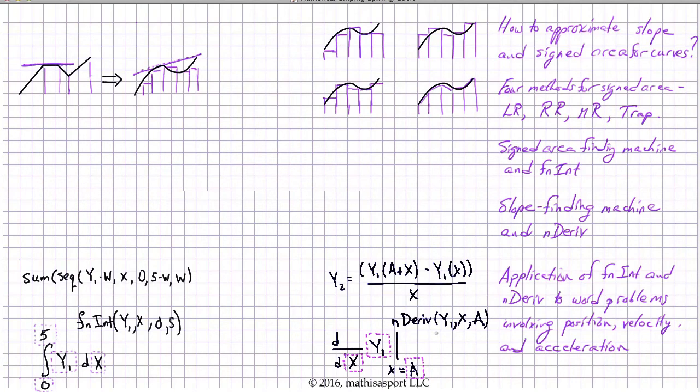And I hope that you can give an example of a situation where our own slope finding machine is actually superior to in Deriv.